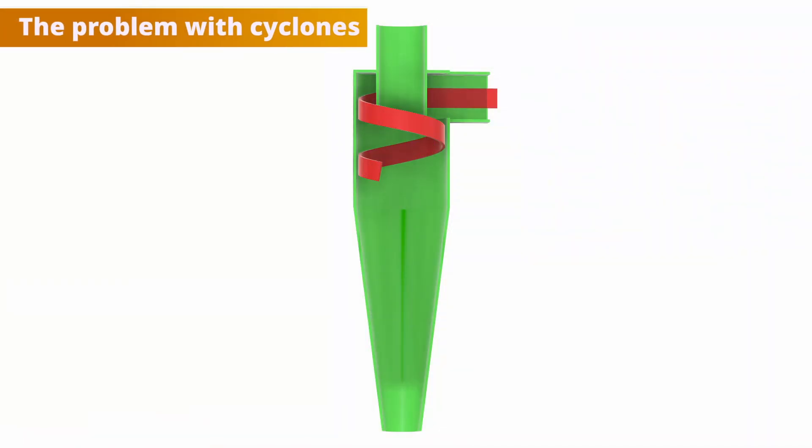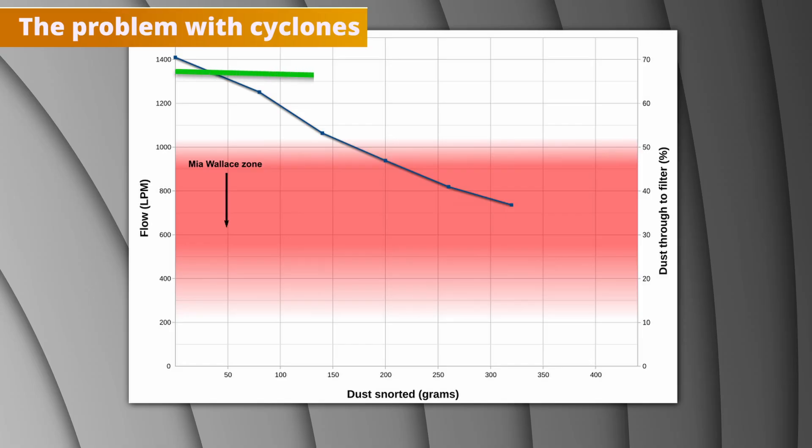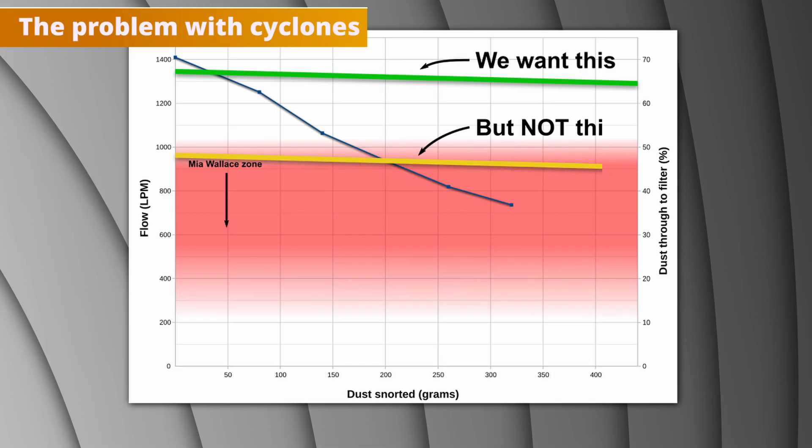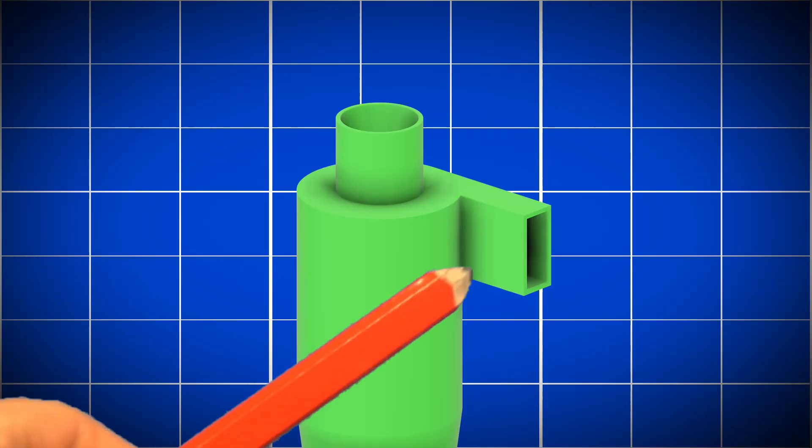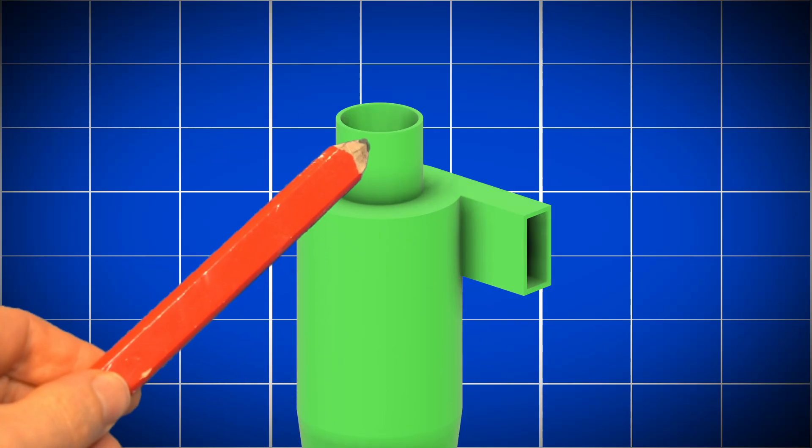Cyclones have a complicated and high friction path for the air to follow which reduces the flow rate. We want something that reduces the flow rate a little bit at the start but maintains the flow for longer by keeping dust out of the filter. What we don't want is to reduce the flow so much that the vacuum is never usable. To do that we're going to try and keep the inlet and outlet area as large as possible.